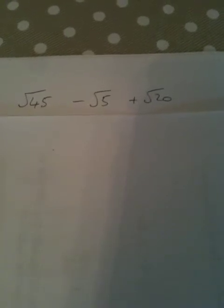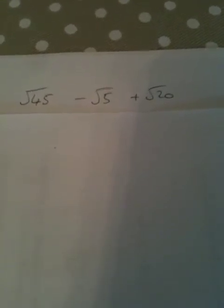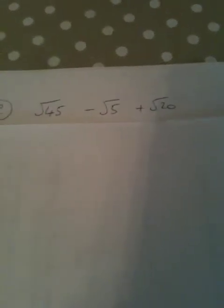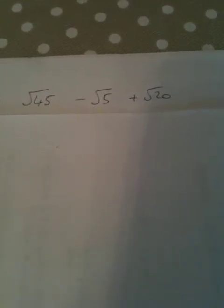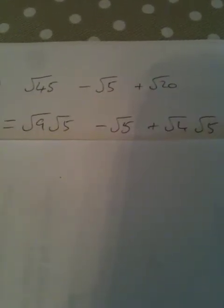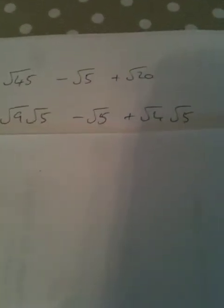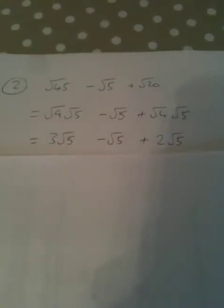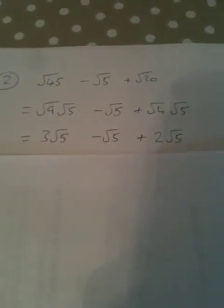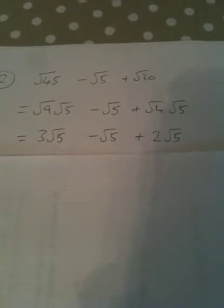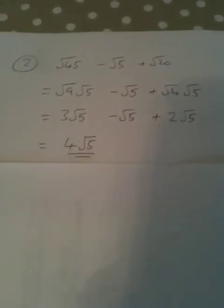On to question number 2. We were asked to simplify this expression. We cannot just add √45 and subtract √5 — that does not become √40. We need to simplify them before adding. Hopefully they will all be in terms of √5: √9×√5 for √45, subtract √5, plus √4×√5, which becomes 3√5 − √5 + 2√5. So 3 somethings take 1 add 2 of the same thing is 4 of them: 4√5.